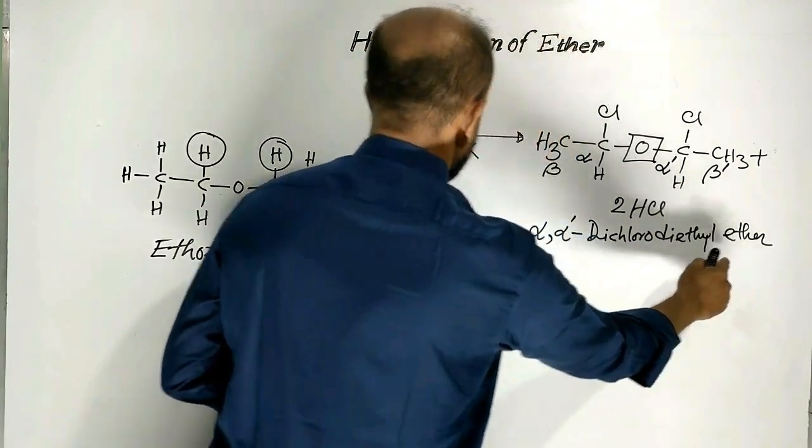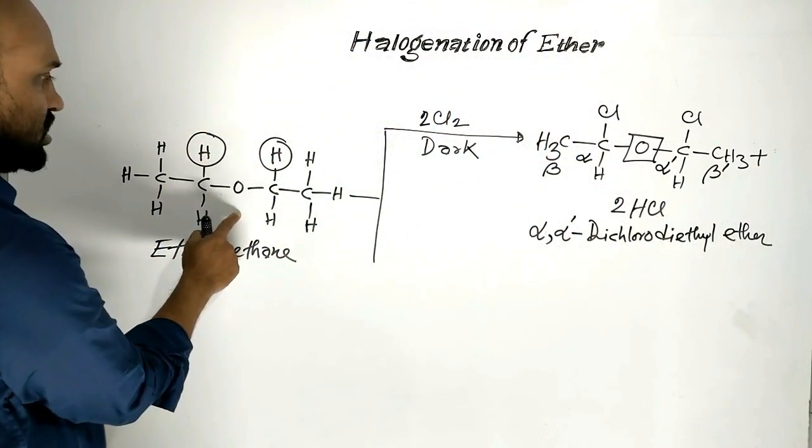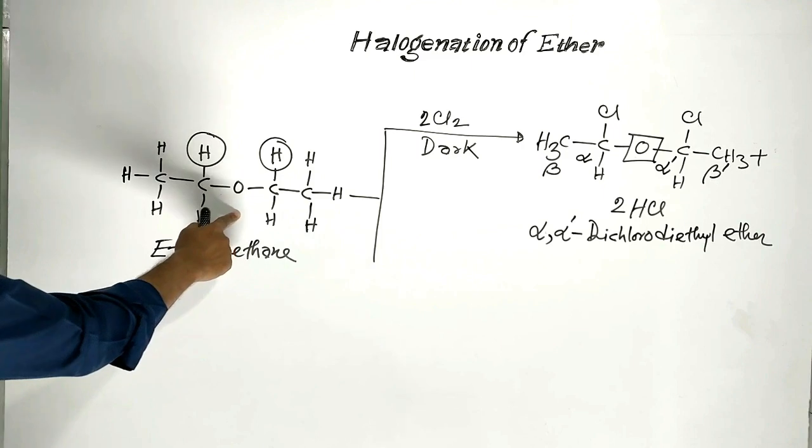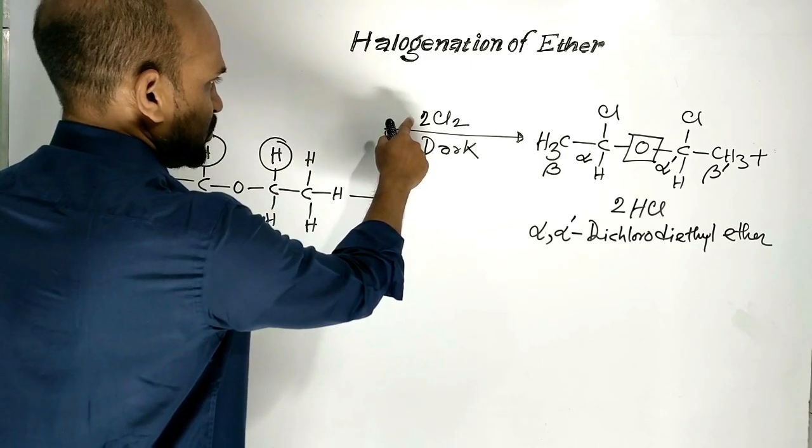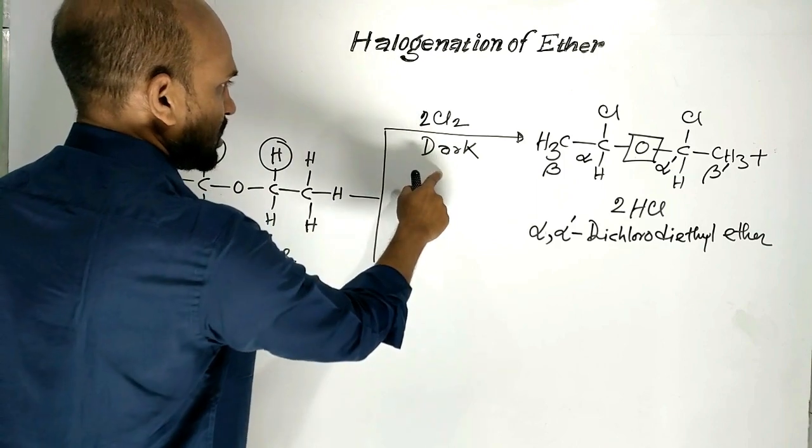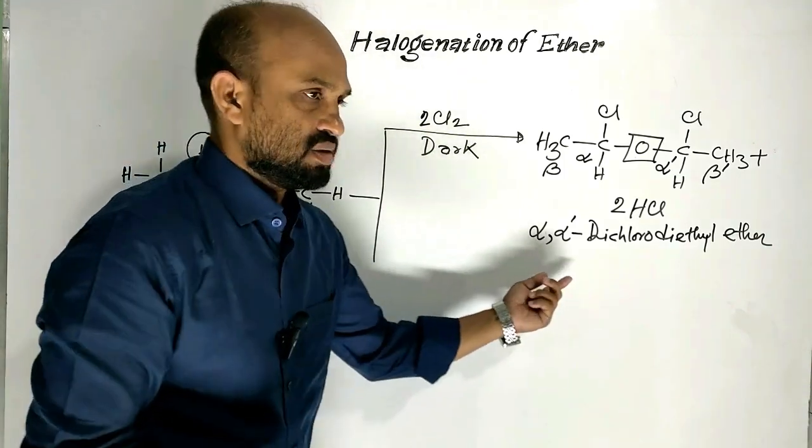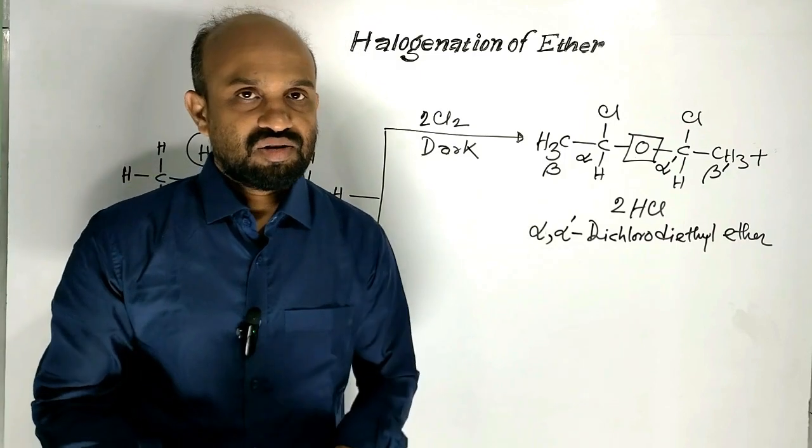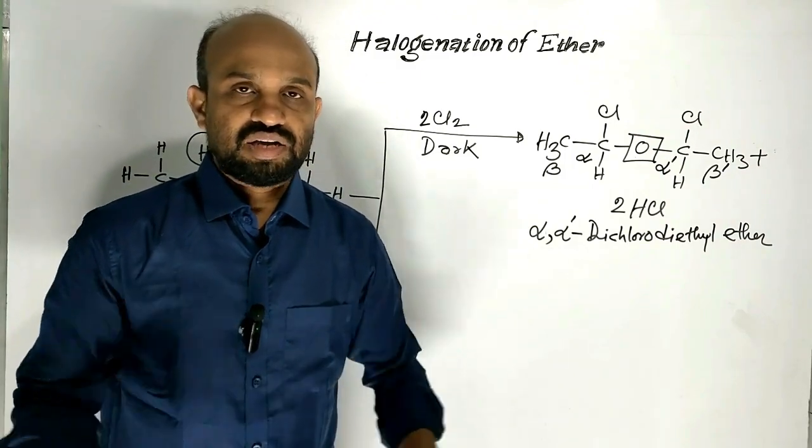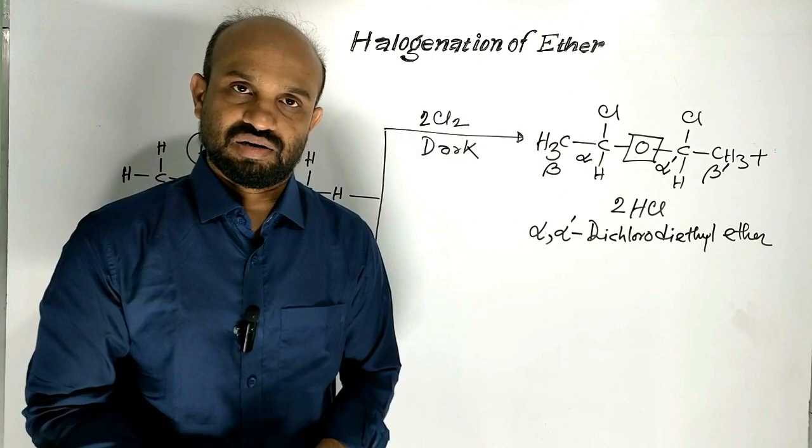When ethoxy ethane is treated with halogen, for example chlorine in the dark, then we get di-substituted ether, alpha, alpha prime, dichloro, diethyl ether.